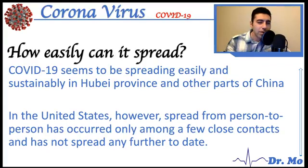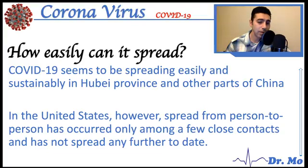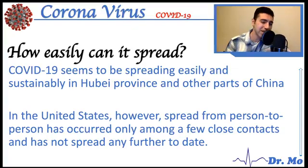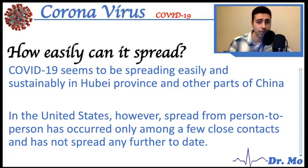How easily can COVID-19 spread? The virus seems to be spreading easily and sustainably in Hubei province in China. In the United States, spread from person to person has occurred but only among a few close contacts. We don't know the exact reason — it may be because there are more infected people in China, or because of stricter regulations. These are just observational findings.